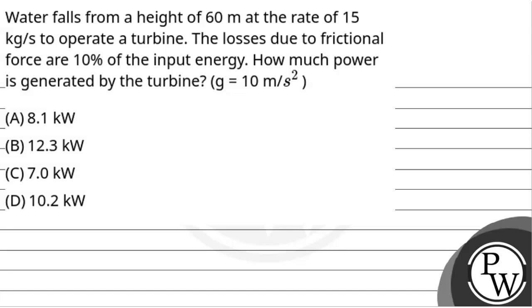Let's read the question. Water falls from a height of 60 meters at the rate of 15 kg per second to operate a turbine. The losses due to frictional force are 10% of the input energy. How much power is generated by the turbine, given g equals 10 meters per second squared? So we will solve this question.